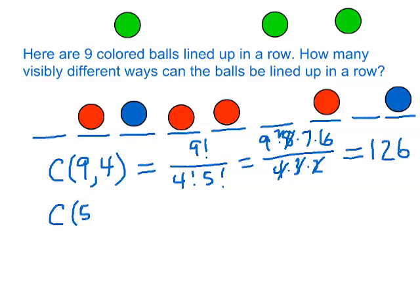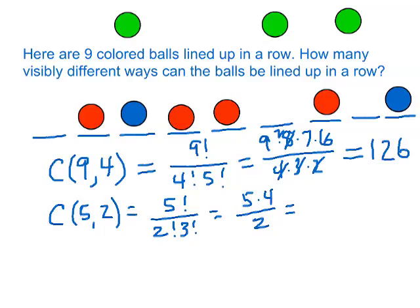We're choosing two from five. That's five factorial over two factorial, three factorial, which is five times four divided by two equals ten. Ten ways to place the blue balls.